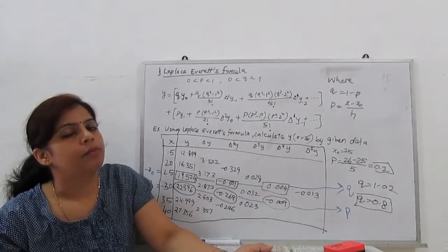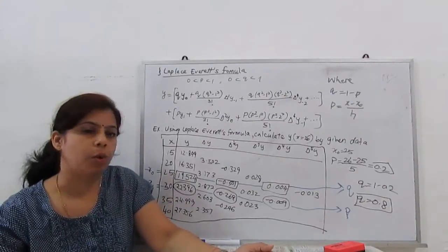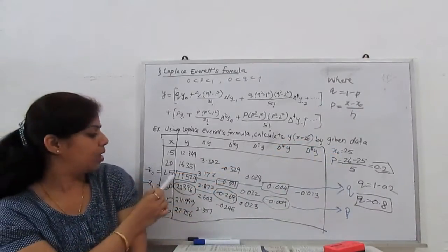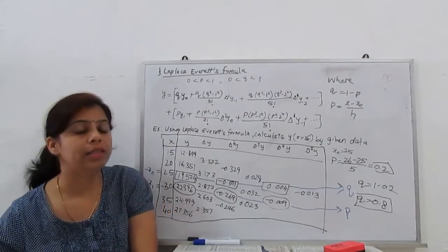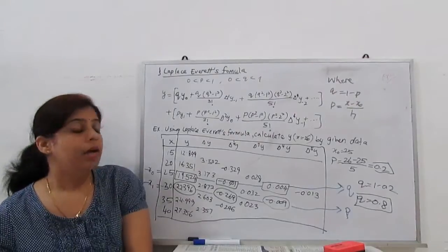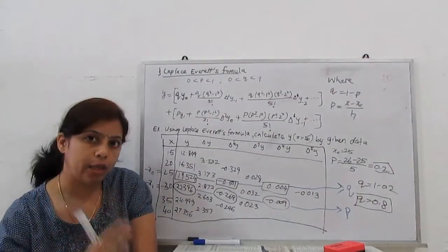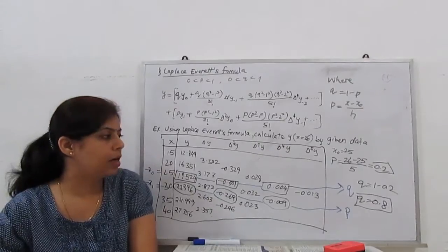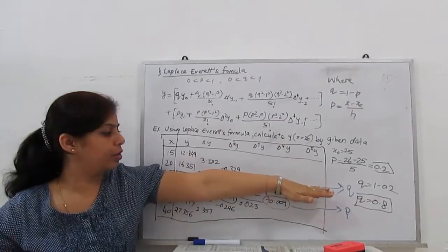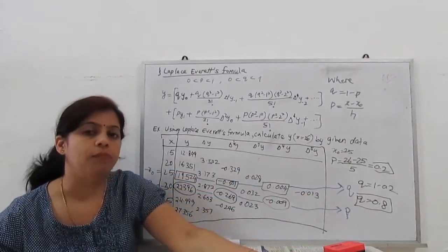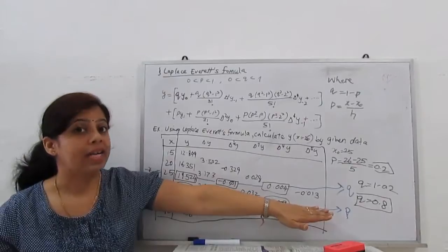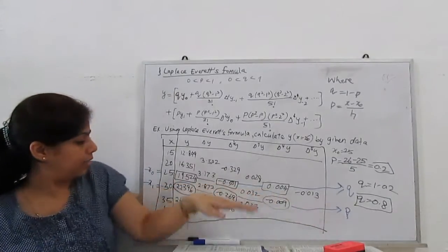Second, decide what is our X0. X0 is the nearest point to X. Our X is 26, so our X0 we will consider is 25. In this formula, it's very nice that the values in Q we substitute from the table is the Y0 line or X0 line. And the values which we are using to substitute in P are on the X1 or Y1 line.